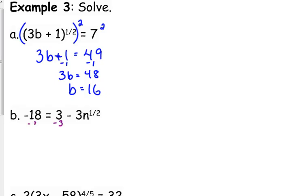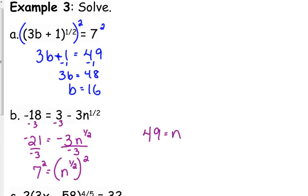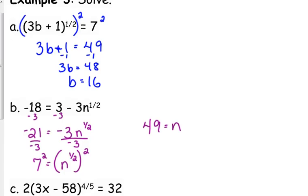In this case, we need to subtract 3 from both sides. So negative 21 equals negative 3n to the one half. And then divide both sides by negative 3. So 7 equals n to the one half. Raise both sides to the reciprocal power. The reciprocal of one half is 2. So we have 49 is equal to n.